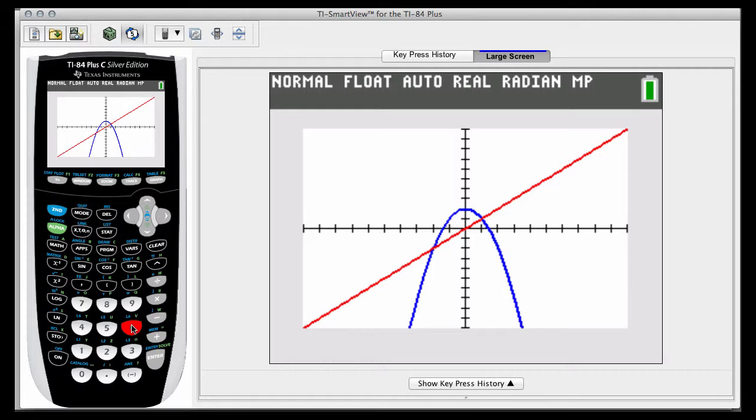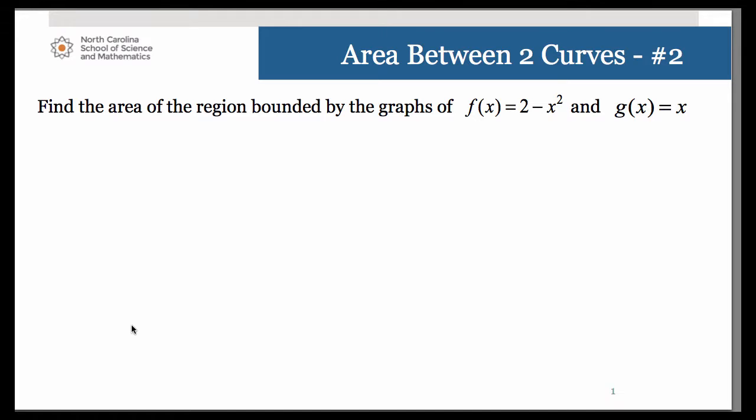So let's go ahead and set up our integral. So our area then will be the integral from negative 2 to 1. Remember, the 2 minus x squared curve was on the top, top minus bottom, minus the bottom curve which was x.